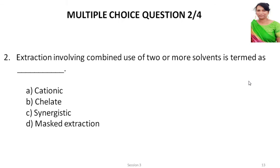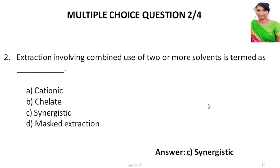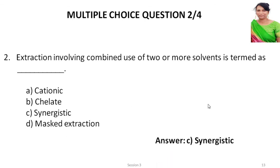Second question: Extraction involving the combined use of two or more solvents is termed as what? Options are cationic, chelate, synergistic, and masked extraction. You have not come across cationic and chelate here, so the obvious choices are synergistic or masked. Since masking does not involve using two solvents together, the answer is C — synergistic.